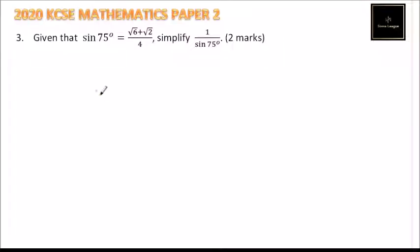This is question number 3, 2020 KCSE Mathematics Paper 2, and we are told given that the sine of 75 degrees is equal to the root of 6 plus the root of 2 divided by 4, simplify 1 over sine 75 degrees. You get 2 marks.